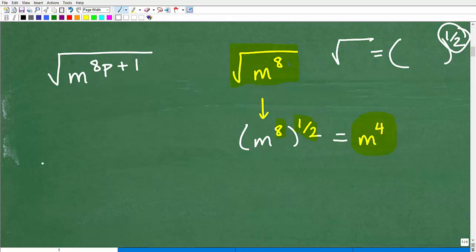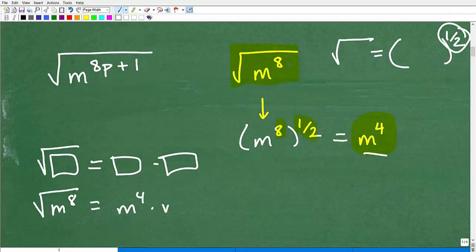That makes sense because, remember, the square root of something is something times itself that gets us back to this answer. So if we're trying to find the square root of m to the 8th and we're saying it's m to the 4th, that's m to the 4th times m to the 4th. What do we do here when we're multiplying powers with the same base? We add the exponents, so that's m to the 8th. This is just a quick review.